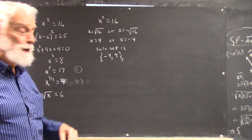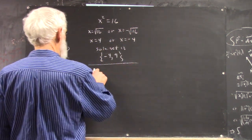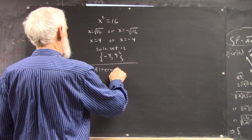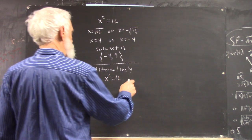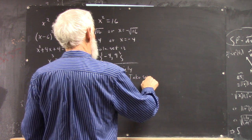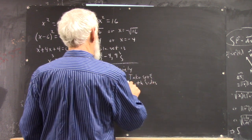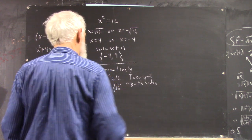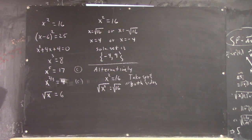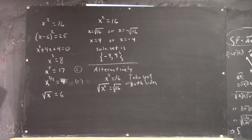One thing you might be tempted to do is take the square root of both sides. So another way of seeing the solution: take the square root of both sides, and you get the square root of x squared equals the square root of 16. Now what's the square root of x squared? It might be x, it might not be — that depends on whether x is positive or negative.